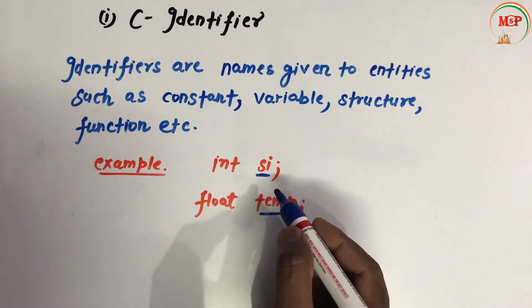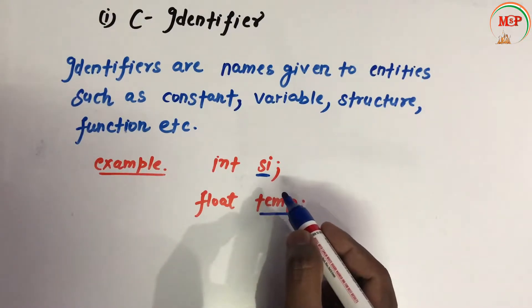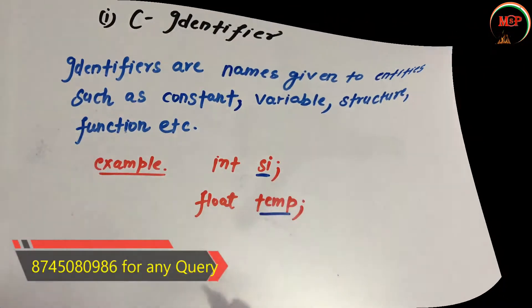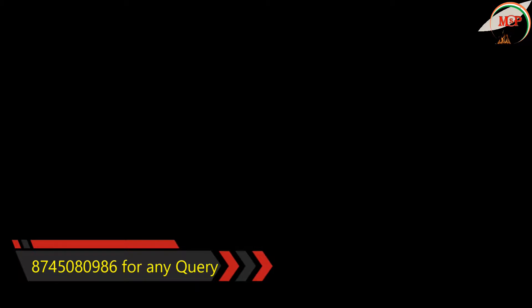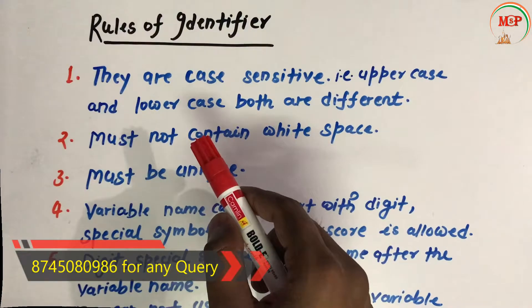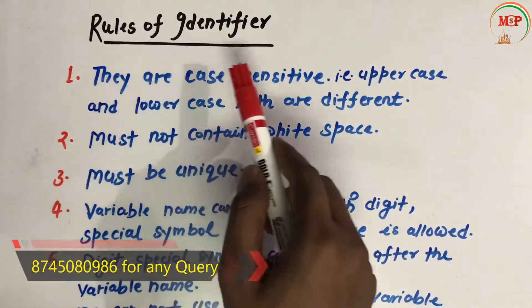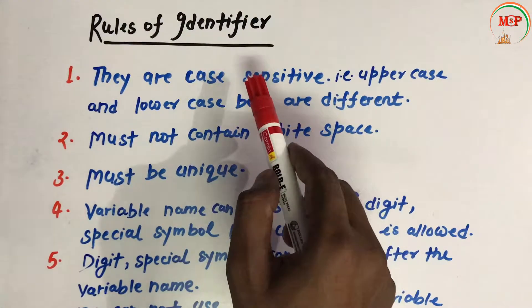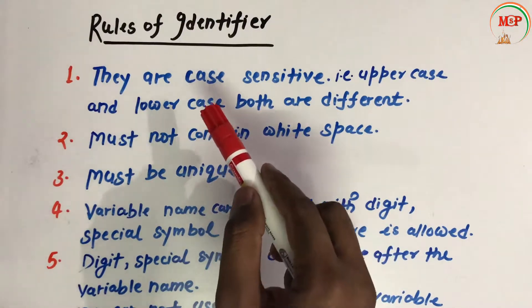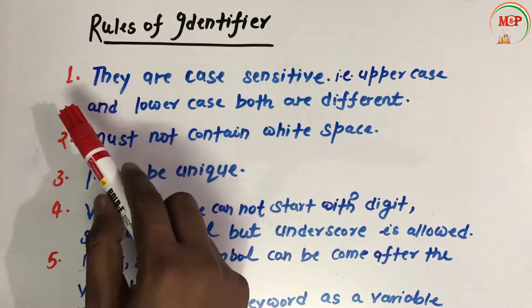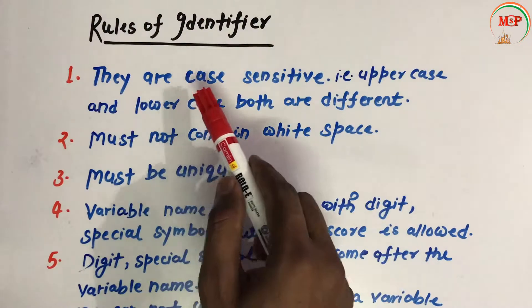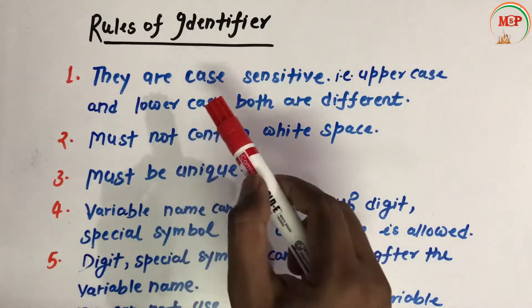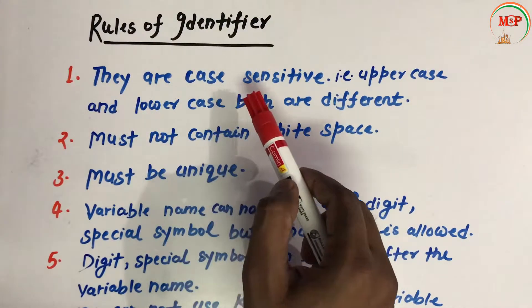Now let's see the rules for naming an identifier. There are some rules we must follow before naming anything in C. The first rule is that identifiers are case sensitive.